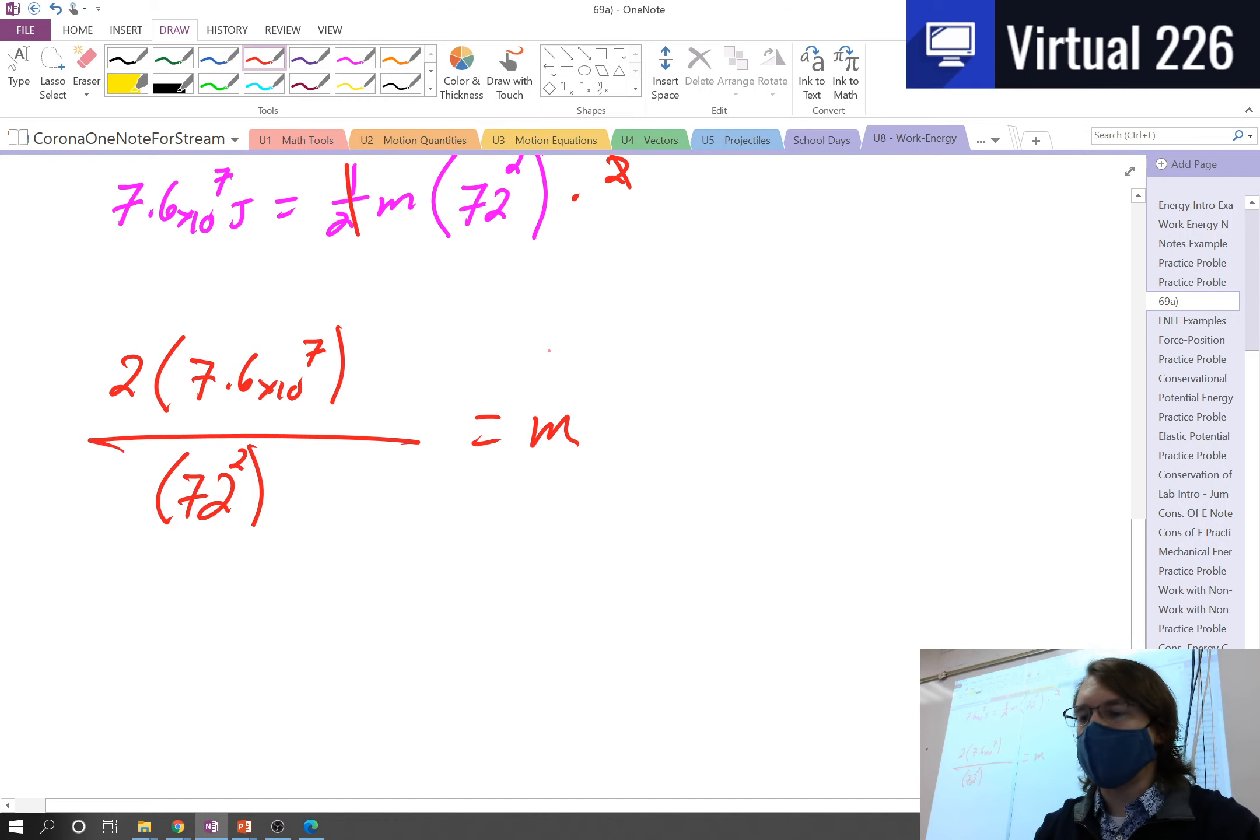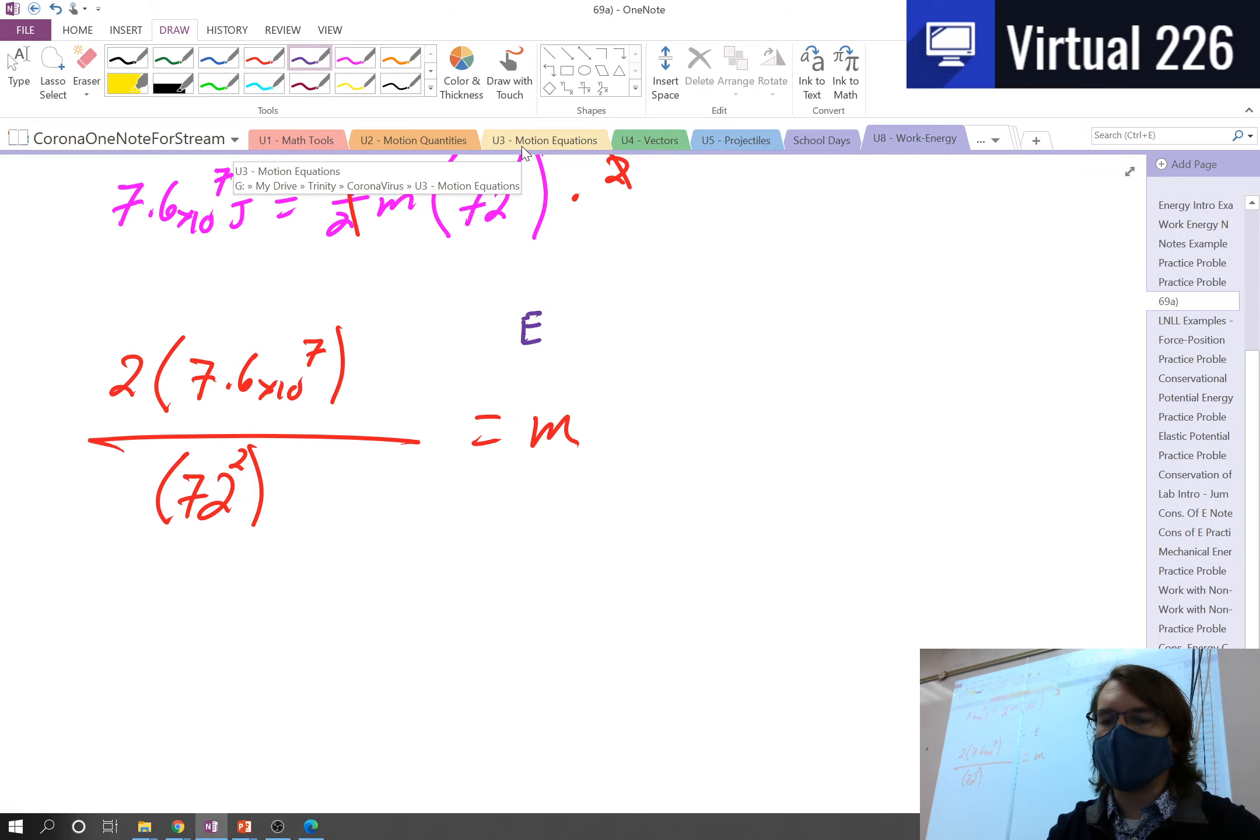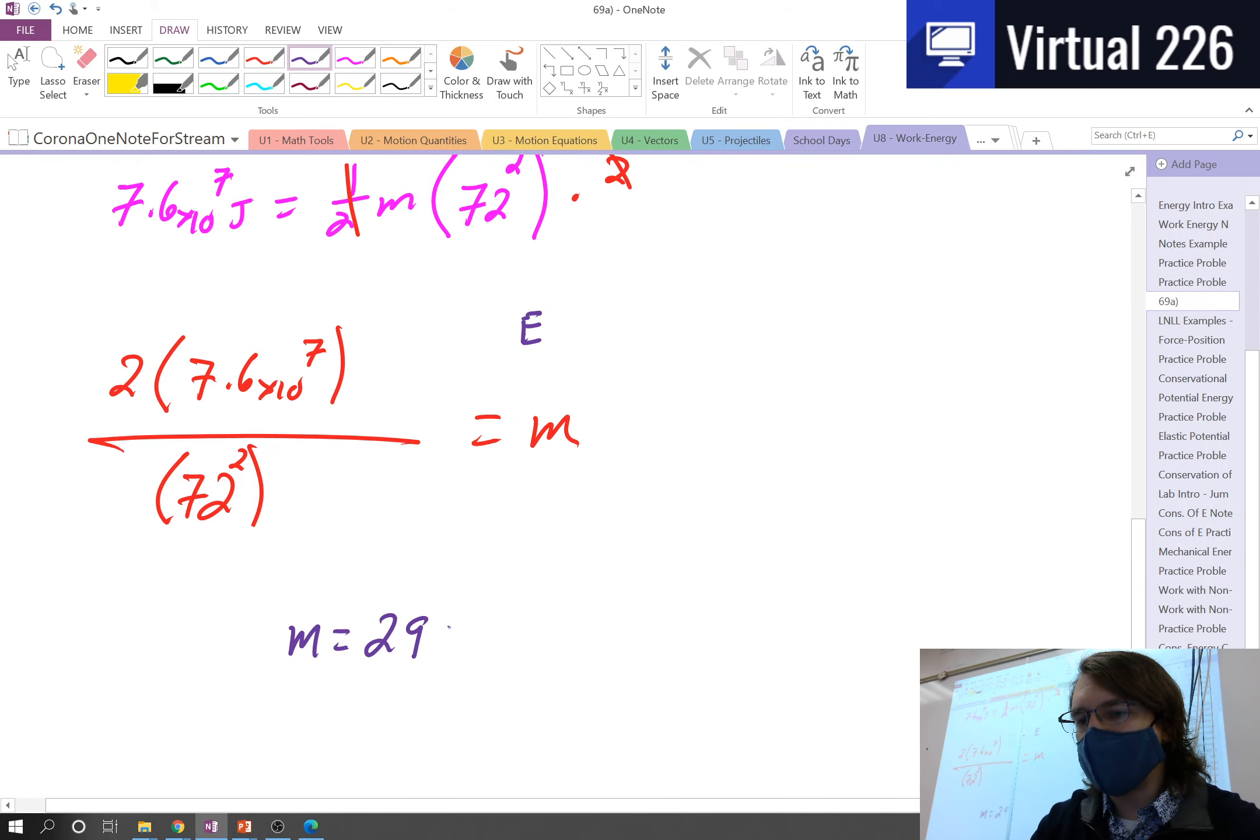So we just plot our calculator now because the problem is done. We just need to crunch numbers. 2 times the quantity 7.6 times 10 to the 7th. Remember, if you're putting times 10 to the 7th into a calculator, it is best to use the E key for that. That is the capital E. That's what we use for scientific notation on calculators. When we slam enter, we get 152 followed by a bunch of zeros. And then we divide by 72 squared. Make sure you put that 72 squared in parentheses when you divide it so that it squares and then divides. We get a final mass of 29,320 kilograms.